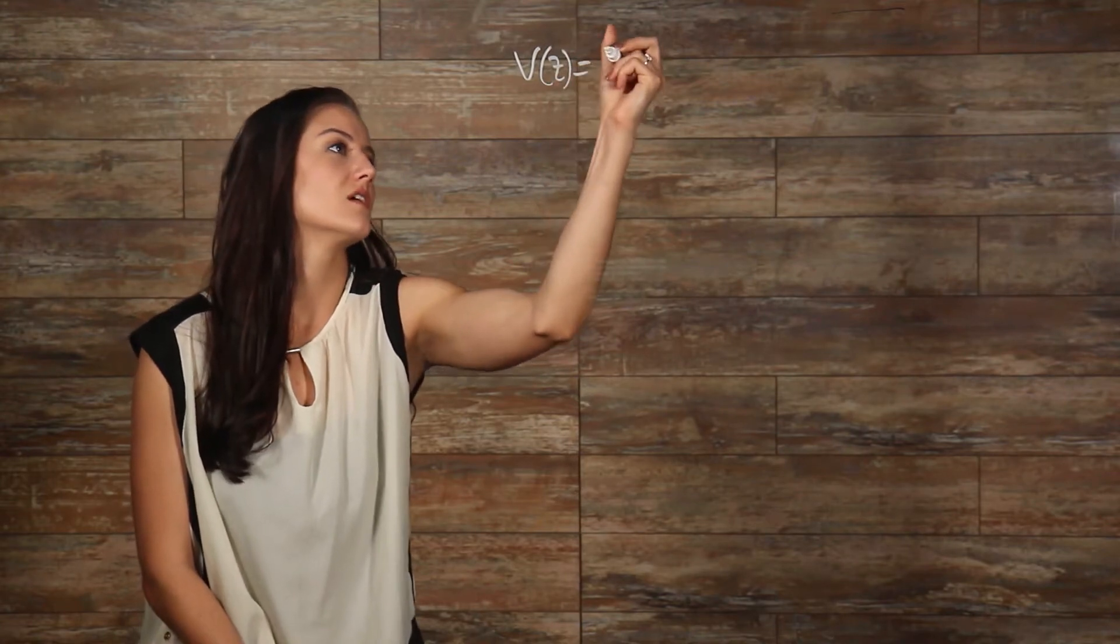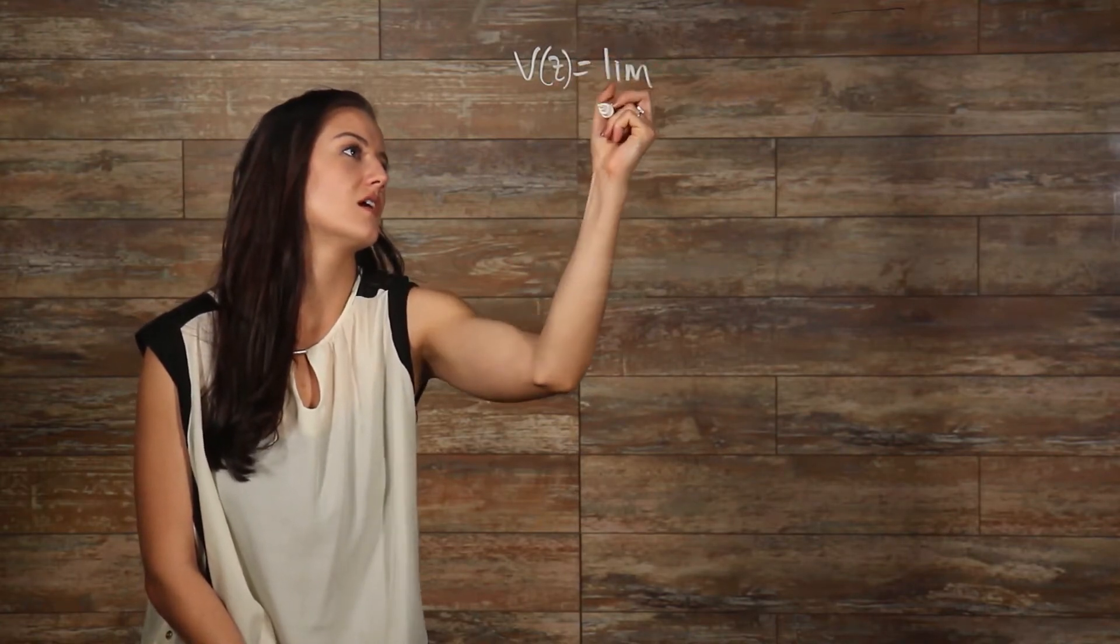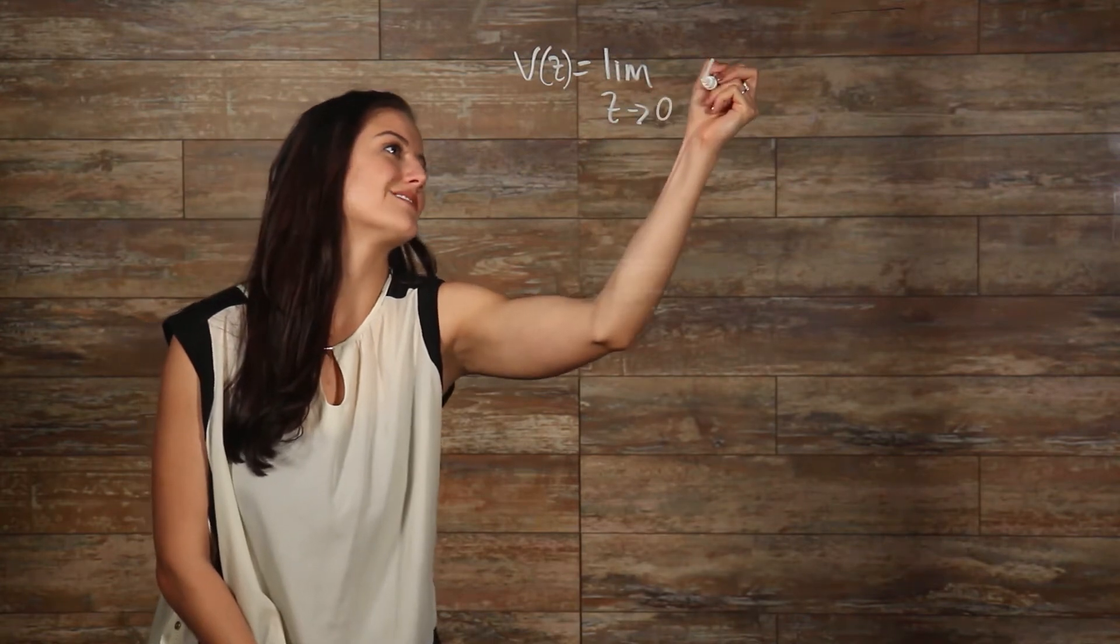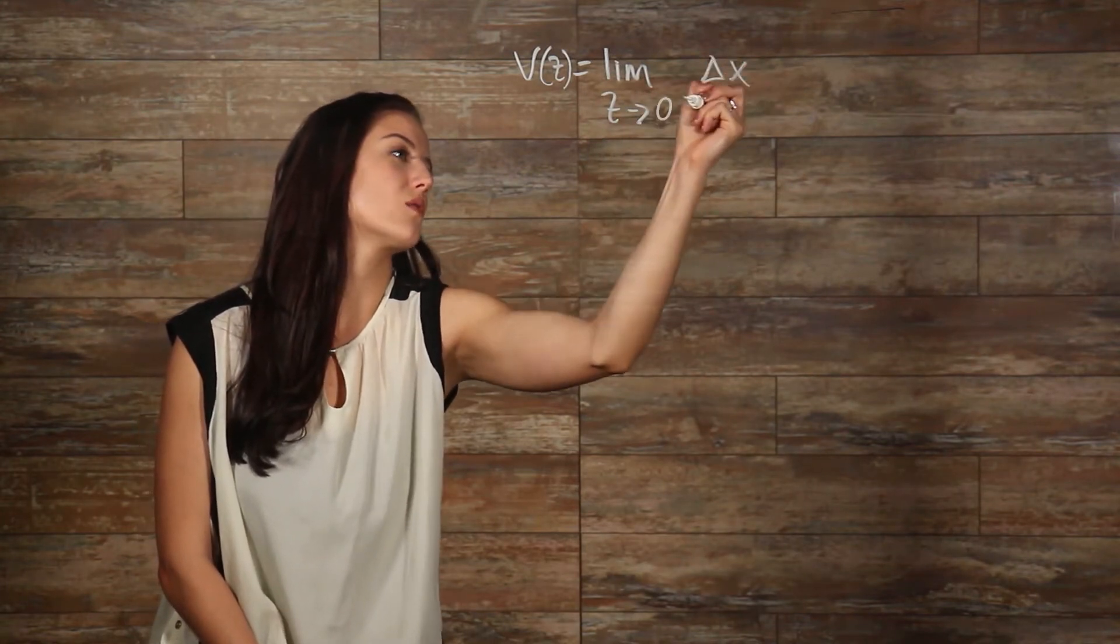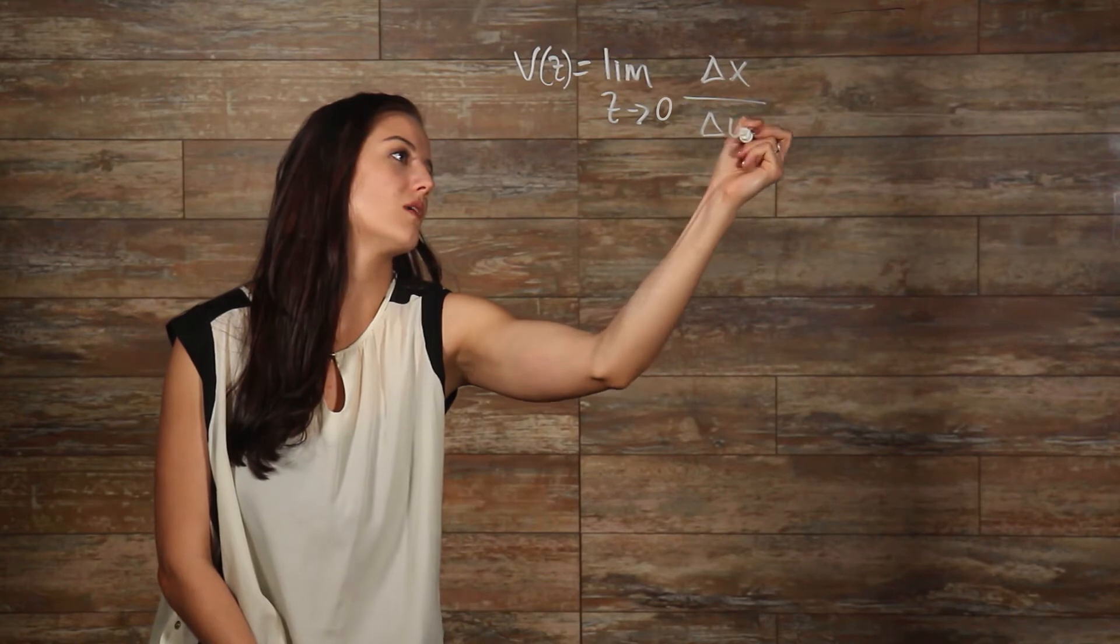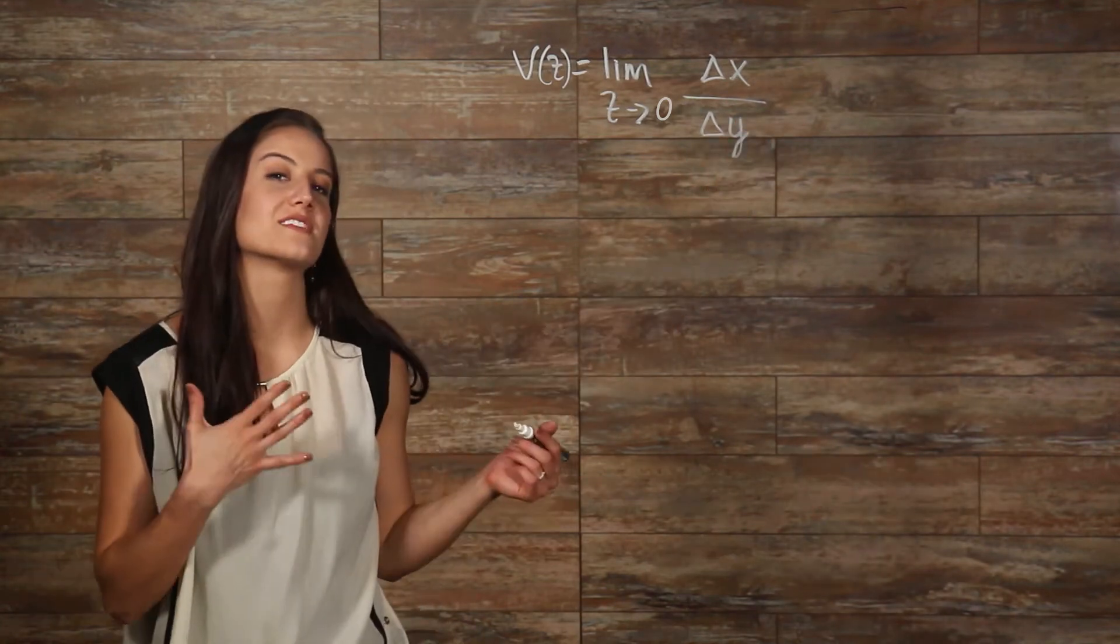Remember the formula we were given to find the instantaneous rate of change of a function? It was velocity of the limit of delta x over delta y. We also learned that this can be rewritten as the limit as x goes to a of f of x minus f of a all over x minus a.